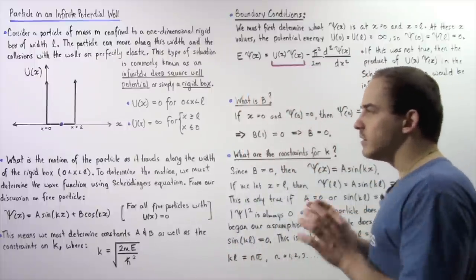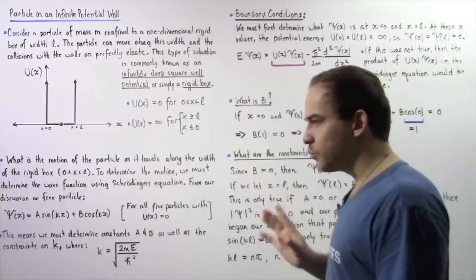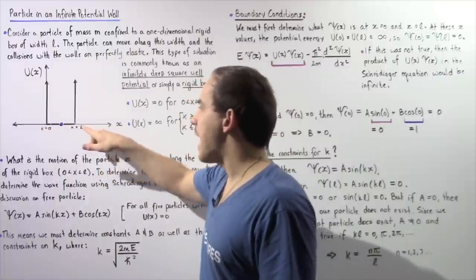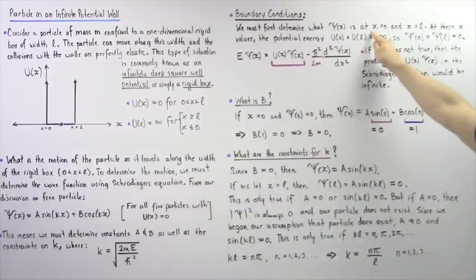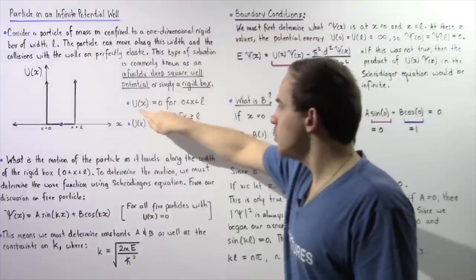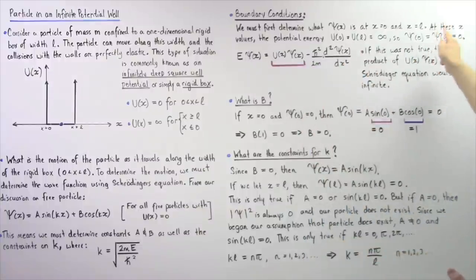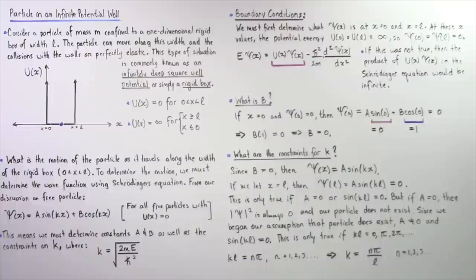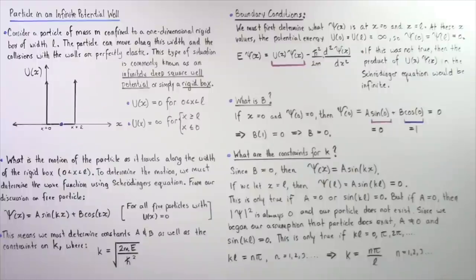Before we begin, let's determine the boundary conditions of our problem — that is, the values of the wave function when the particle is found at the corners of the rigid box. We need ψ(0) and ψ(L). We know the potential energy at x=0 and x=L: U(0) and U(L) are both equal to infinity, meaning the energy of the particle at the corners is infinite.